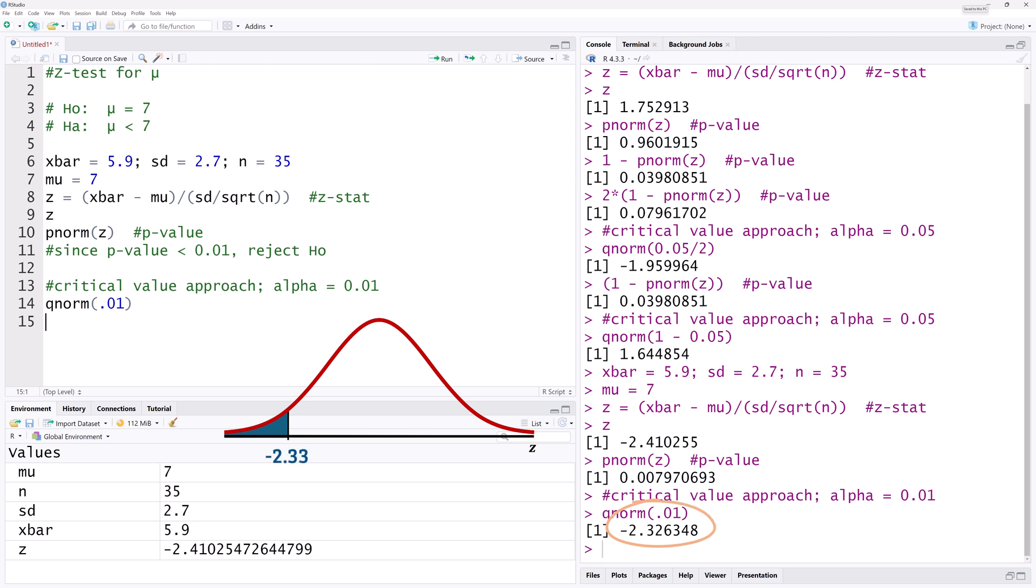That is, the result is significant if the Z stat is less than negative 2.33. Since the Z stat is less than negative 2.33, we again reject the null hypothesis at alpha equals 0.01 and say that the result is significant.